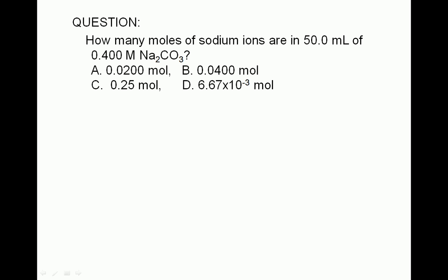How many moles of sodium ions are in 50.0 milliliters of 0.400 molar Na2CO3? a. 0.0200 moles, b. 0.0400 moles, c. 0.25 moles, or d. 6.67 times 10 to the negative third moles.